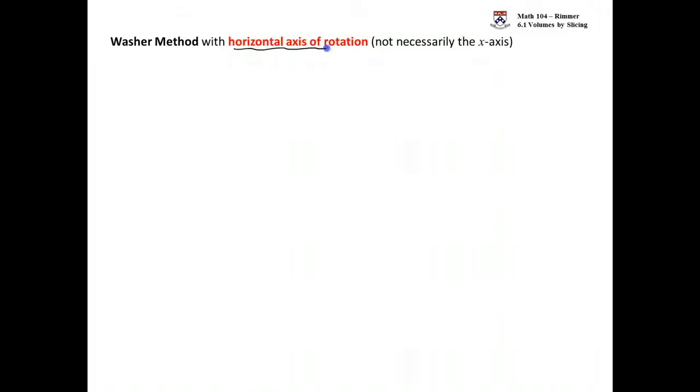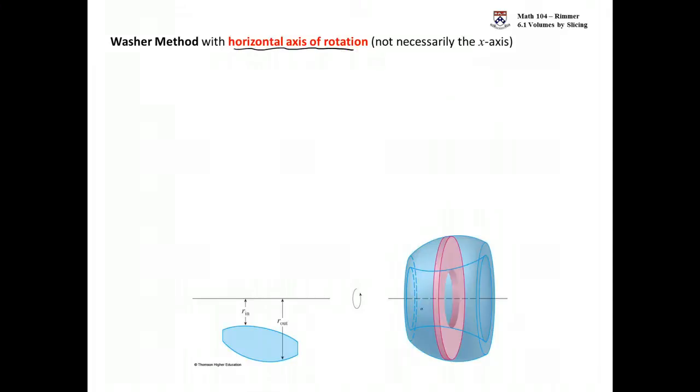Washer method. Say the axis is back to being horizontal. So I have this region here and I'm going to rotate about this axis. Maybe it looks like the x-axis. That's fine. And so what's going to happen is because there is this gap between my axis and my region, when I go to revolve this, my cross sections will be washers.